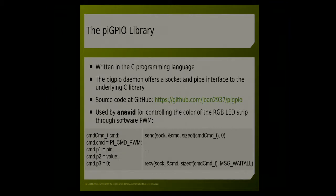The PIGPIO library is something really important for my project because it allows me to set the color of the RGB LED strip. It offers a socket and a pipe interface in the underlying C library. It's available on GitHub. The RGB LED strip has the three main colors — red, green, and blue — and I have to set a value between 0 and 255 for each, which means there are more than 16 million combinations. To do this I need to use pulse-width modulation. Unfortunately, Raspberry Pi has only one pin with hardware PWM, and obviously for three colors I need three pins. So what I'm doing is software-defined pulse-width modulation, which is done by the PIGPIO library.